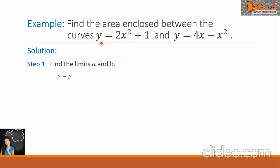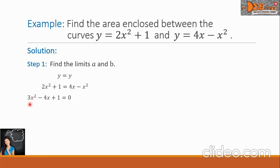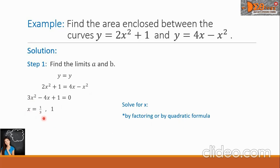What we will do is equate y of the first function equals the y of the second function. It also follows that the right-hand side of the first function is equal to the right-hand side of the second function. So we write here: 2x squared plus 1 equals 4x minus x squared. Let us transpose the right-hand members to the left-hand side and combine like terms. So we have now 3x squared minus 4x plus 1 equals 0. Now let us solve for x. We can do this by factoring or using the quadratic formula. The value of x equals 1/3 and 1.